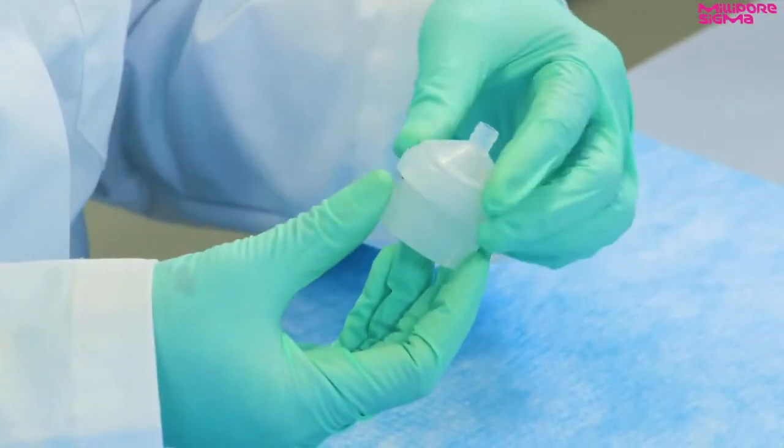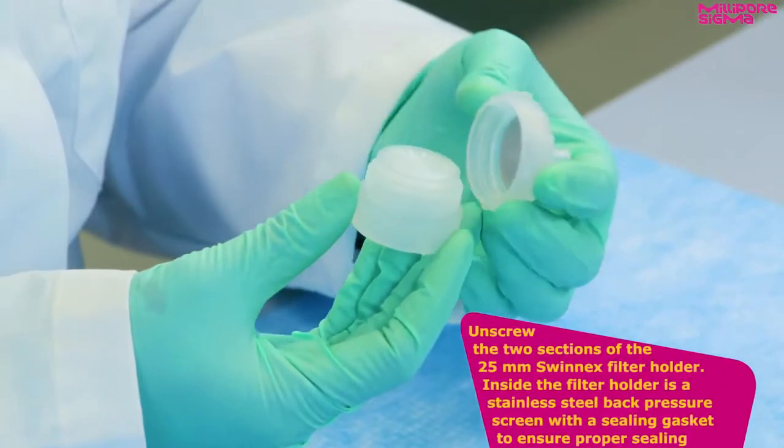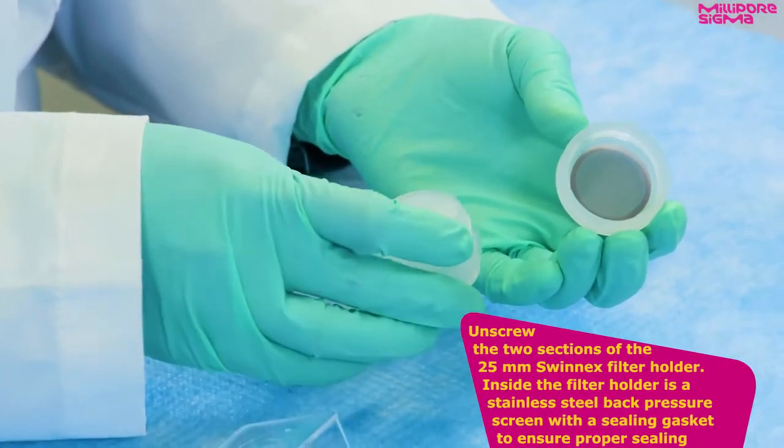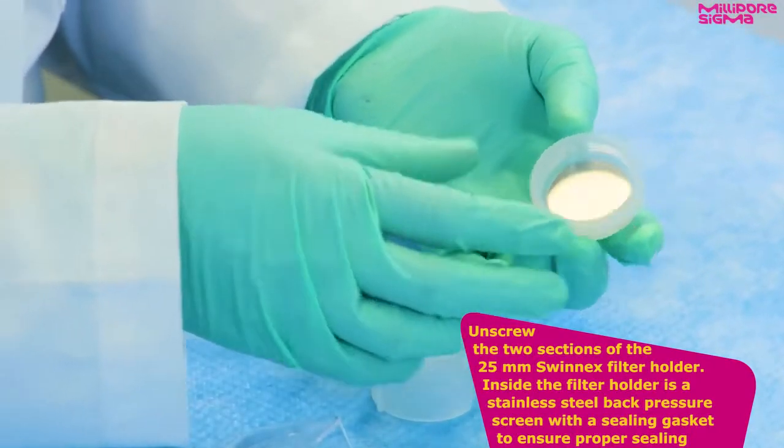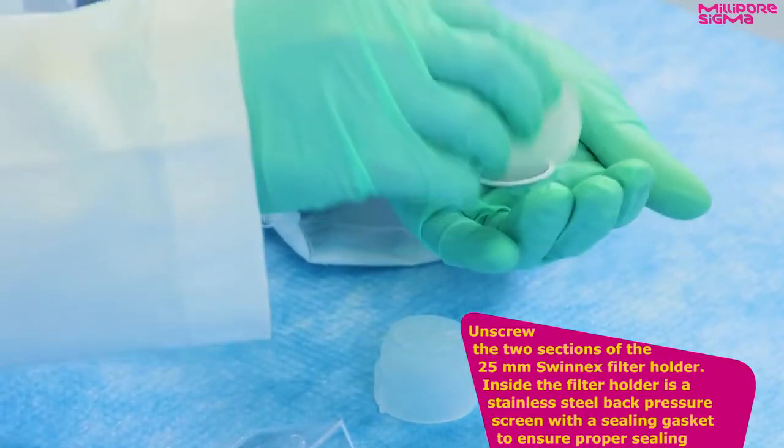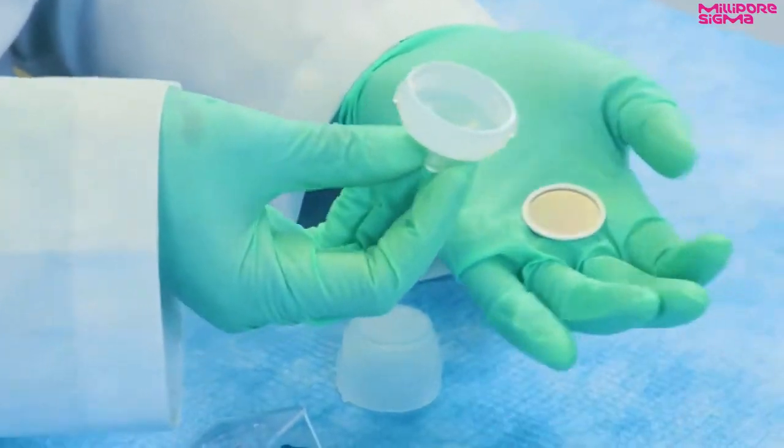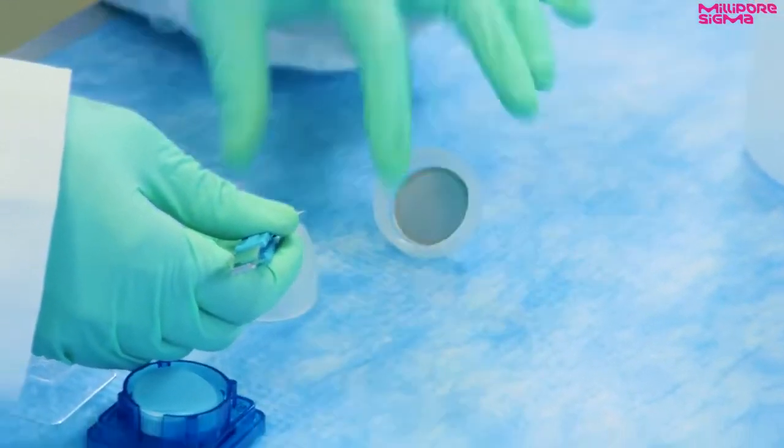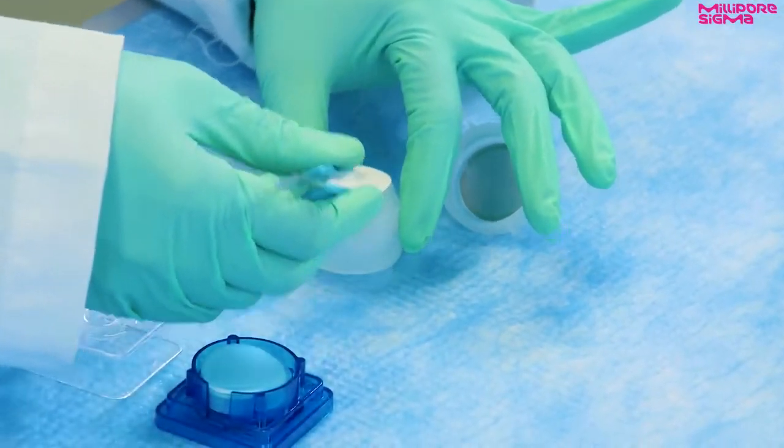To prepare the filter for rinse solvent, first unscrew the two sections of the 25 millimeter Swinix filter holder. Inside the filter holder is a stainless steel back pressure screen with a sealing gasket to ensure proper sealing. Use forceps to center a 25 millimeter white filter disc on the perforated plastic support in the lower section of the filter holder.